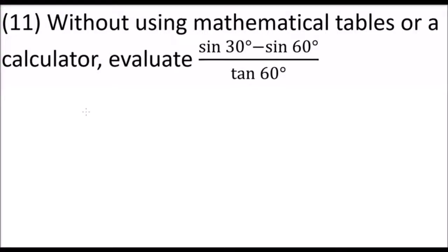Question number 11: Without using mathematical tables or a calculator, evaluate sin 30° minus sin 60° divided by tan 60°. For this question we use what we call special angles. Special angles are 30 degrees, 45 degrees, and 60 degrees.